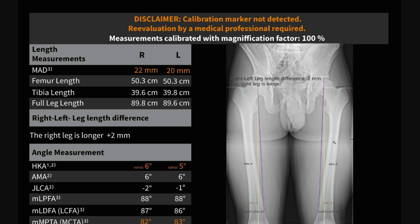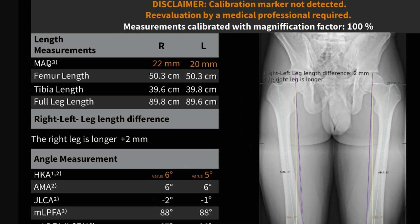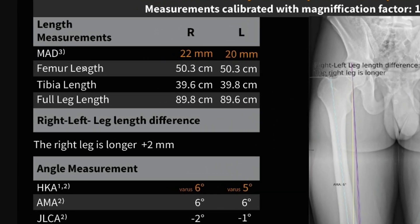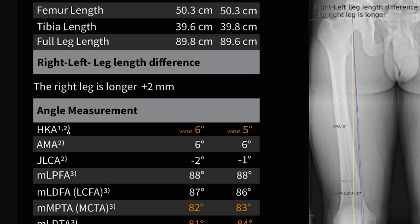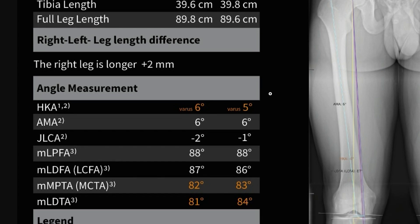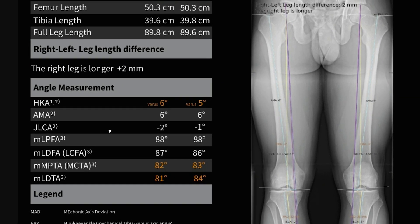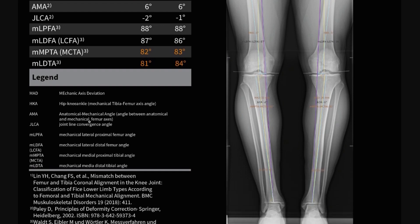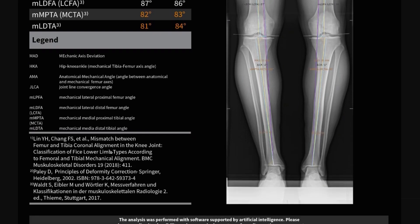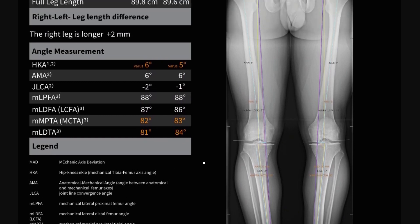This is an example report from their homepage. You can see all the measurements it provides: mechanical axis deviation, length measurements for every bone separately, but also the full leg length — one that I used to measure manually. It also gives the leg length difference, the angle of the knee axis, and all these different measurements. You can see the hip-knee-ankle mechanical axis, the anatomical mechanical angle, and more — maybe even more than I measured manually.